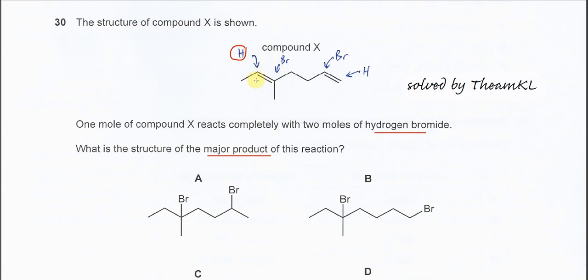For this carbon and this carbon, we know that this carbon has one hydrogen and one methyl group. And this carbon has two alkyl groups. So the hydrogen is going to bond to this carbon.